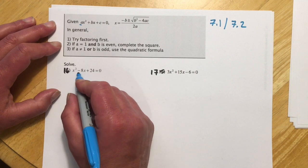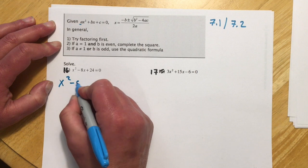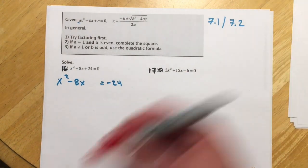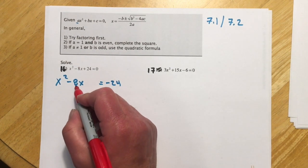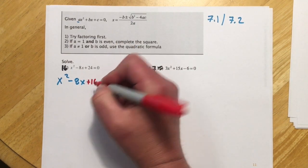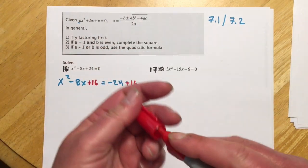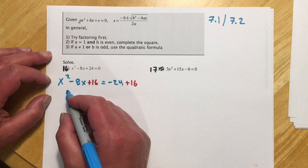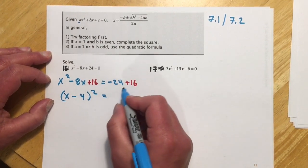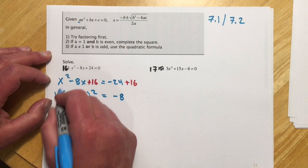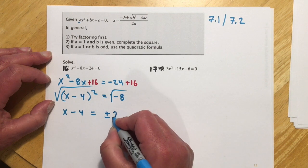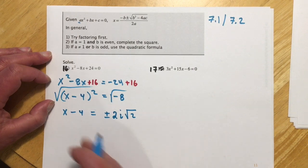This first one, x squared minus 8x, leads with a 1 and has an even middle term, so I'll complete the square. First step: move the 24 over. Then take half of 8 — that's 4 — square it to get 16, and add 16 to both sides. This gives (x minus 4) squared equals negative 8. Taking the square root of both sides: x minus 4 equals plus or minus the square root of negative 8. Since the negative makes it imaginary, root 8 simplifies to 2i root 2. Adding 4 over gives x equals 4 plus or minus 2i root 2.